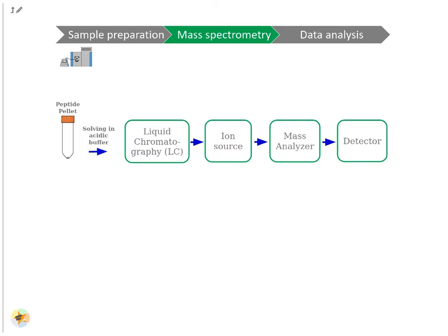Sample measurement in an MS consists of different steps. A high-performance liquid chromatography system is attached in front of the MS, as it separates the injected peptide mixture according to their hydrophobicity. The peptides elute from the LC column into the MS within several minutes to hours. This reduces sample complexity and gives the MS more time for measurement. The acidic LC buffer charges the peptides positively at their N-terminus and the basic lysine or arginine amino acids on the C-terminus. The LC column is directly connected with the ion source needle, where high voltage and heat are applied to evaporate the ionized peptides into the gas phase. This process is called electrospray ionization.